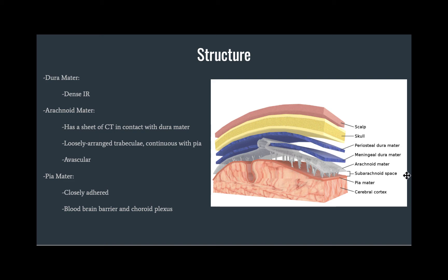The subarachnoid space is confluent with and communicates with brain ventricles where CSF is produced. The entire arachnoid mater layer is considered avascular because it lacks nutritious capillaries, but it is important to highlight that it does have large blood vessels running through it that will penetrate through the pia mater into the brain.